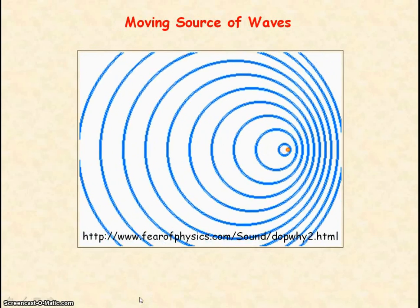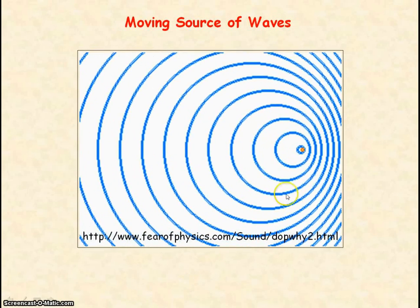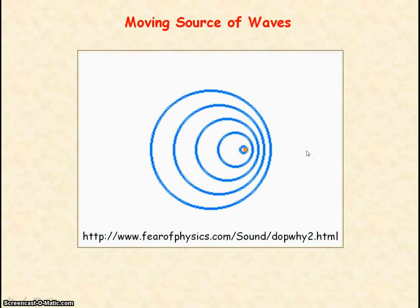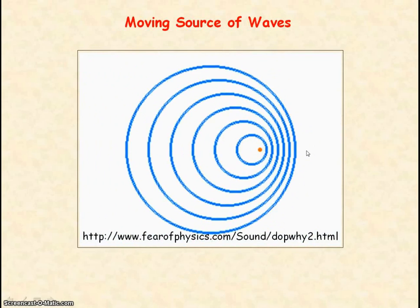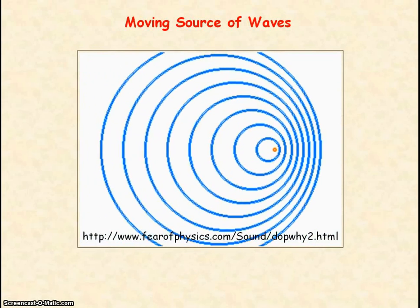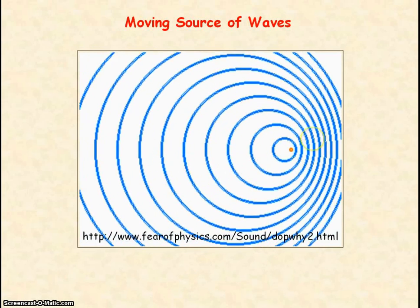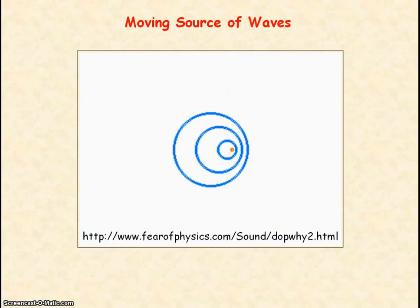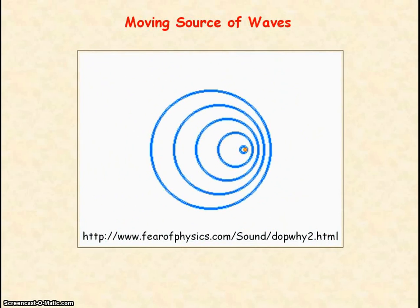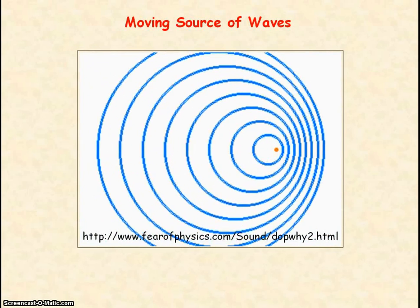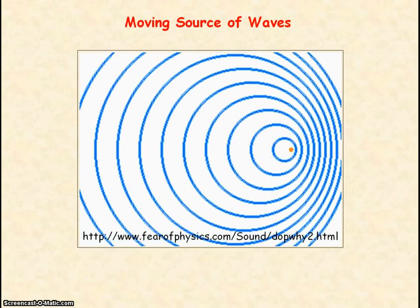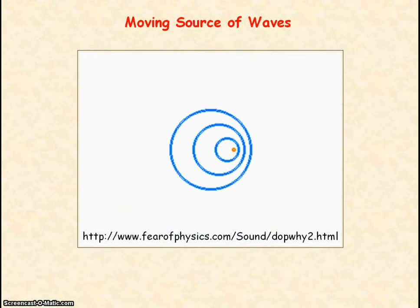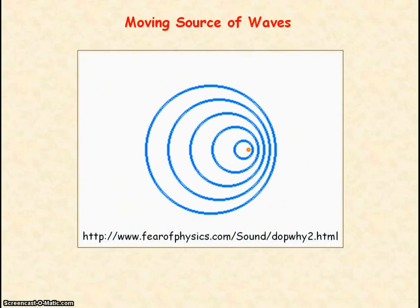Here you have a moving source of waves still emitting waves of frequency f. However, an observer in front of the source — so the source is moving towards the observer — the observer will detect a higher frequency or a shorter wavelength.